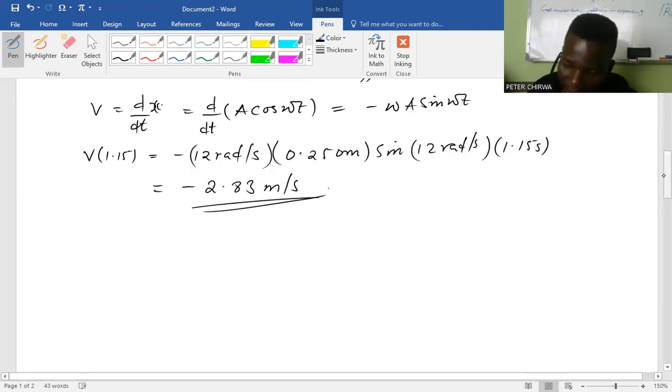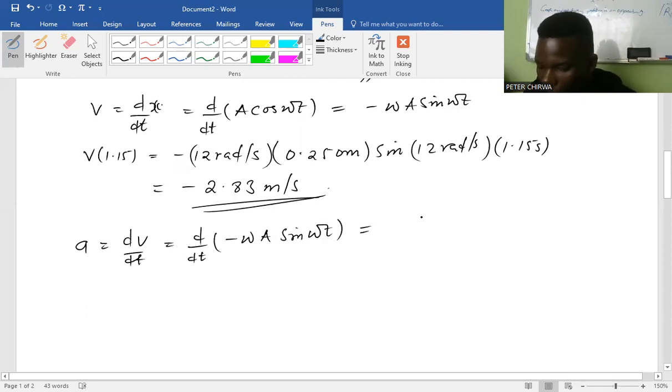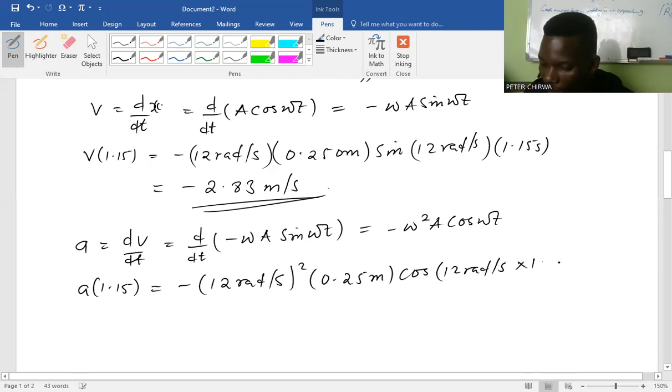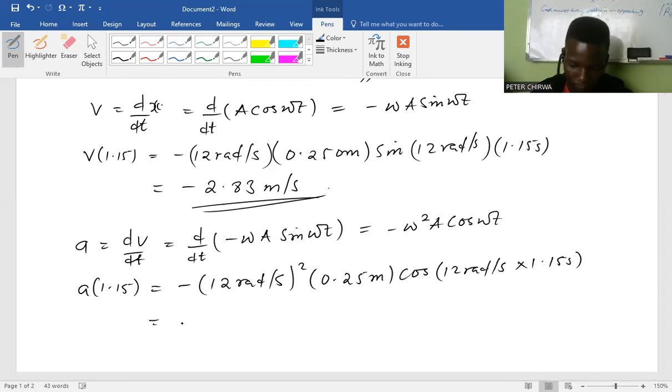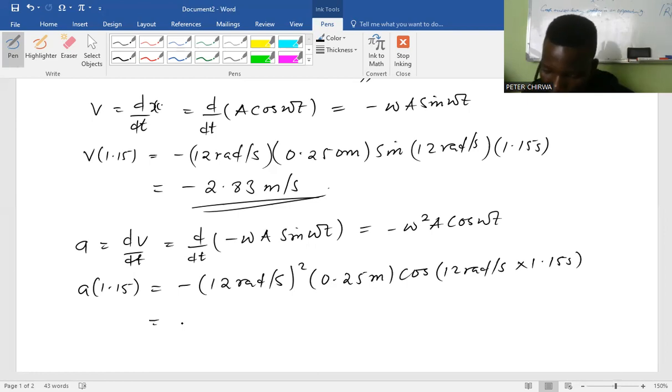For us to get acceleration, we differentiate again. Once we differentiate this one, we're going to get negative omega squared A cos ωt. So acceleration at time 1.15, we're going to have negative 12 squared times 0.25 meter cos 12 times 1.15 seconds. So we're going to have negative 11.91 meters per second squared.